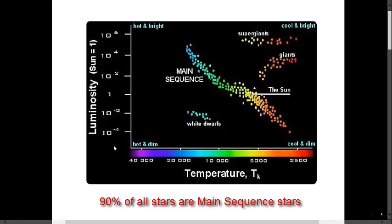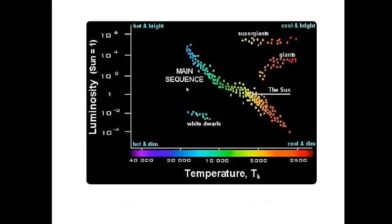90% of all stars appear in the center portion of the HR diagram. This is called the main sequence and is where stars spend most of their lives. Stars are considered main sequence stars once their core becomes hot enough at 10 million degrees Kelvin for nuclear fusion to begin.